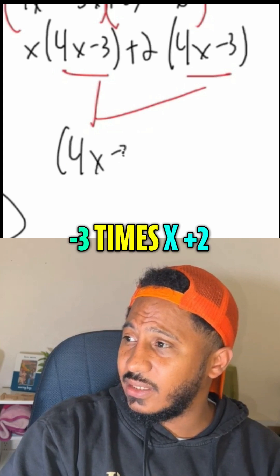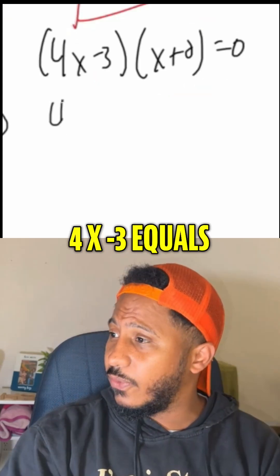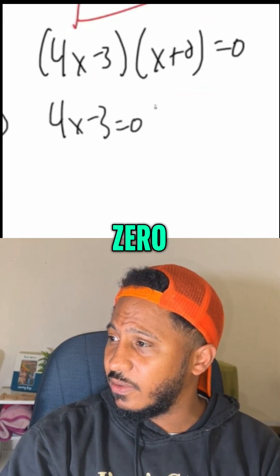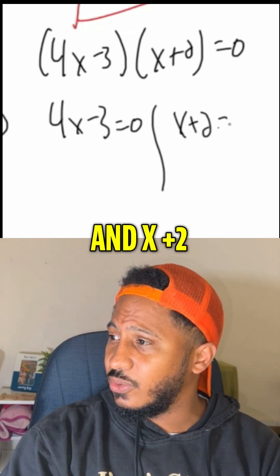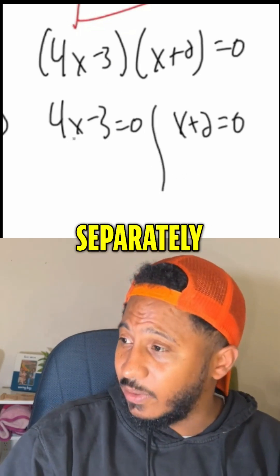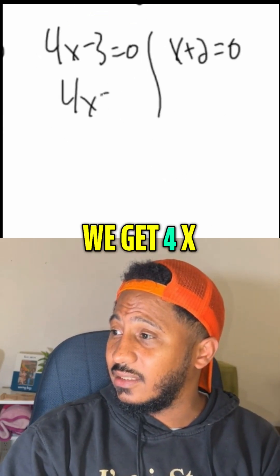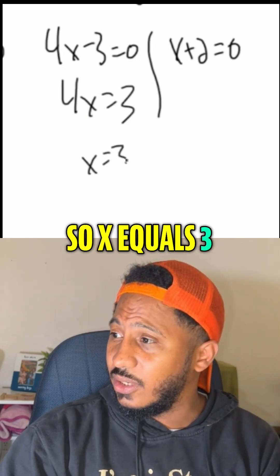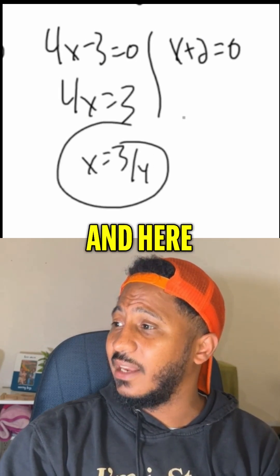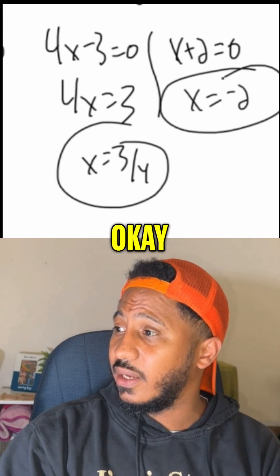We get 4x minus 3 times x plus 2 times the parts in front. 4x minus 3 equals 0, and x plus 2 equals 0. Solving each separately, we get 4x equals 3, so x equals 3 over 4. And here subtracting 2, we get x equals negative 2.